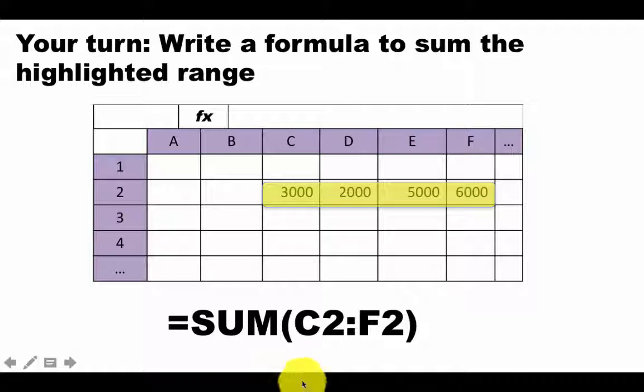In fact, you can also write SUM C2 plus D2 plus E2 plus F2, but that's fairly foolish because you're saying it's like saying sum of 10. Because C2 plus D2 plus E2 plus F2 is one value, and then you're saying sum of that value. There's no sense in saying SUM at all. The best way to write this is SUM C2 colon F2.